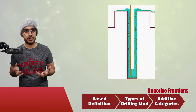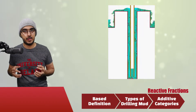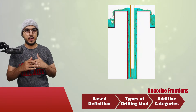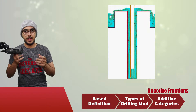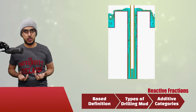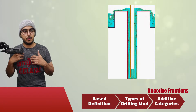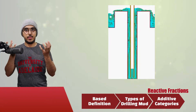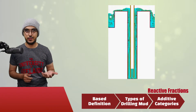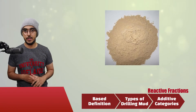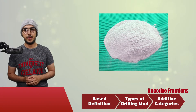Increasing the viscosity of the mud will increase its lifting capabilities and also suspension capabilities — lifting the cuttings up to the surface. The suspension capability matters during workover operations when you need the mud to stay still so the cuttings don't fall — you need a high-viscosity fluid to keep them suspended. Examples of reactive fractions are bentonite for freshwater-based muds and atapulgite for brine or seawater-based muds.